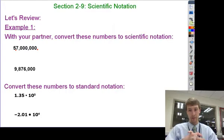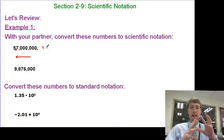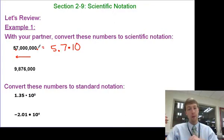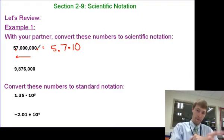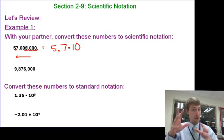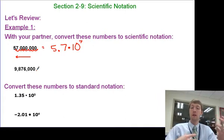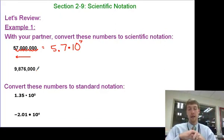Let's look at a couple of examples. If I have 57 million, notice where my decimal is — it's at the very end — and I want to move it so that my leading number is between 1 and 10. So my leading number is going to be 5.7, and then it's going to be times 10 to the something. The power of 10 is how many times I move this decimal to go from the end of the number to make it 5.7. We move the decimal seven times, so this is 5.7 times 10 to the seventh. If I actually multiplied that out, I would get 57 million — 10 to the seventh is a one with seven zeros, and multiplying by 5.7 gives 57 million.